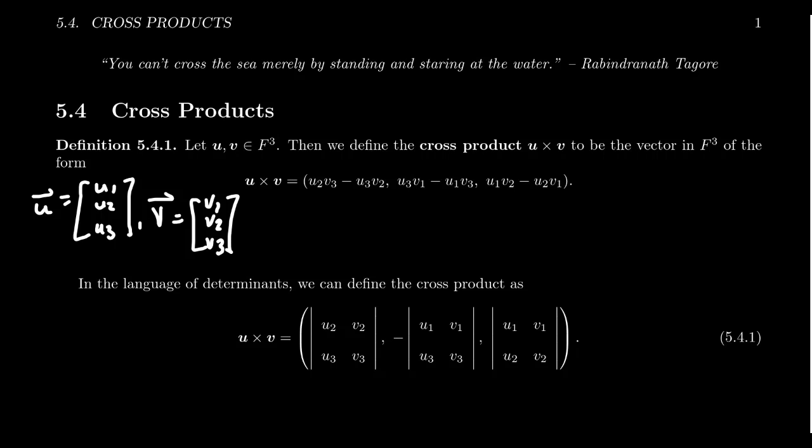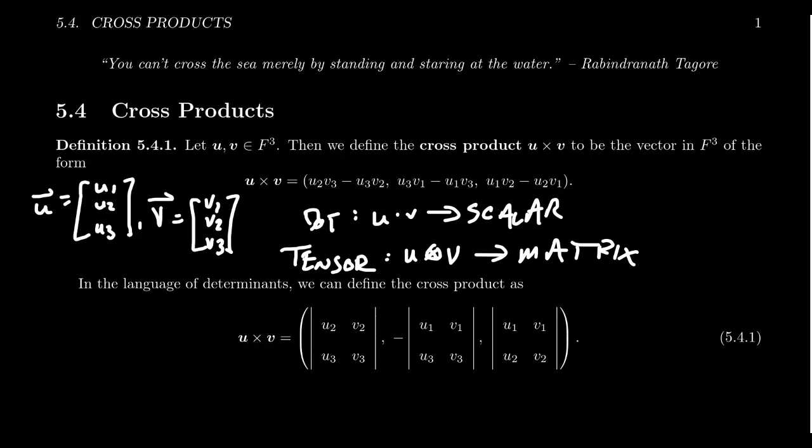When it comes to two vectors u and v, we define their cross product. The word cross here just represents the notation for the multiplication, because we're starting to see there's lots of different multiplications of vectors. There's the dot product, u dot v, which gives us a scalar, and as such is sometimes called the scalar product or inner product. We had the tensor product, u tensor v, which outputs a matrix, and as such the tensor product is sometimes called the matrix product or the outer product.